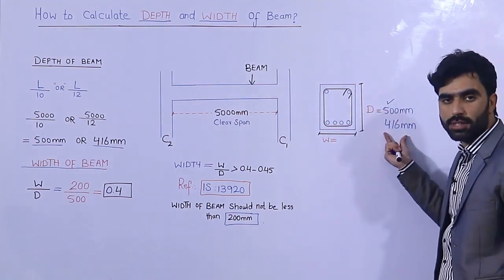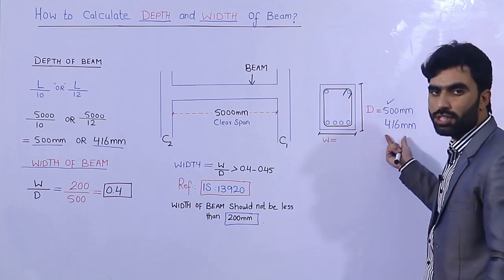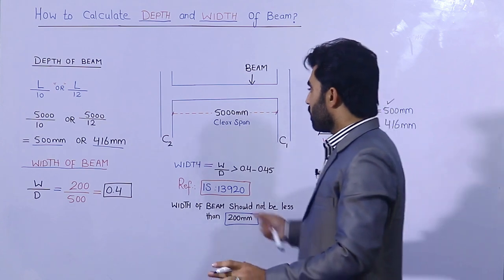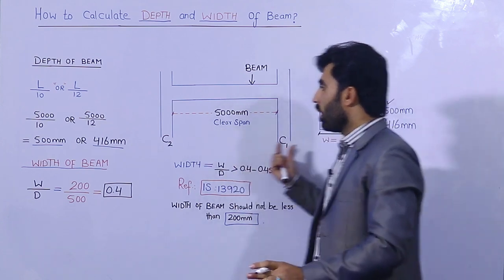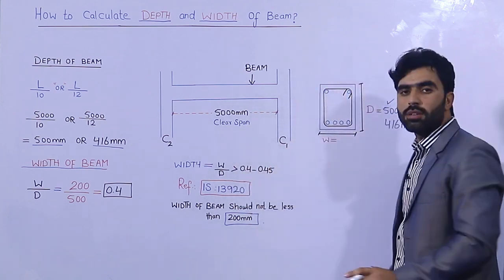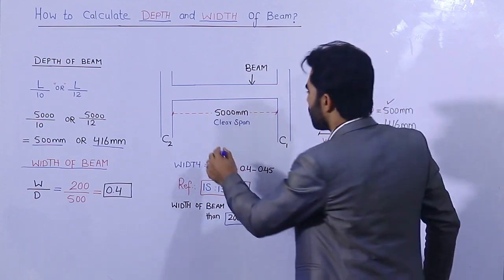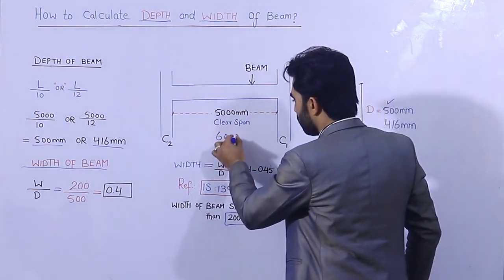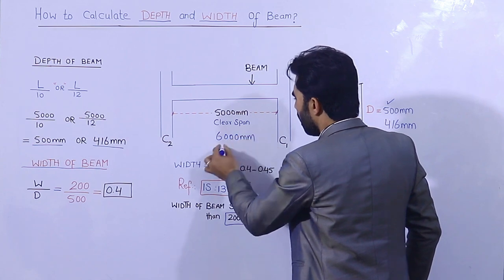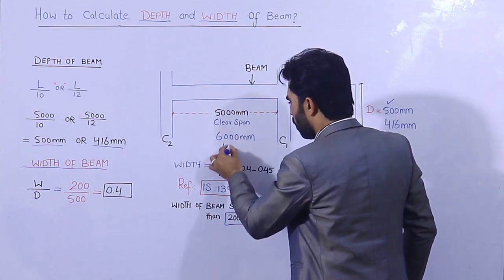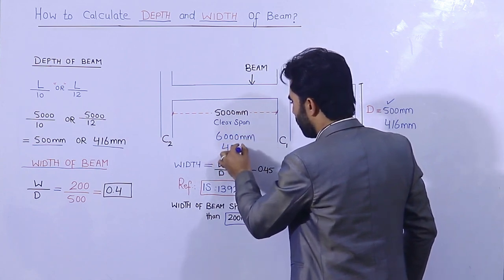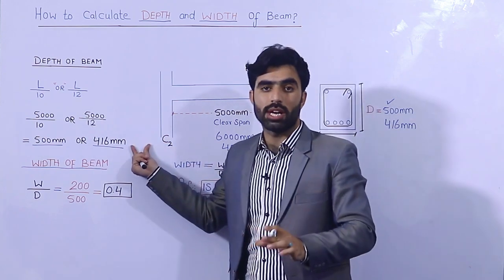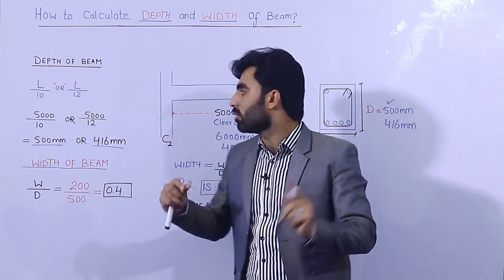500 mm is better than 416 mm because factor of safety is very important in civil engineering, especially for any kind of structure. This is the formula to find the depth of the beam. If the span is 6000 mm or 4000 mm, you can use the same formula by thumb rule.